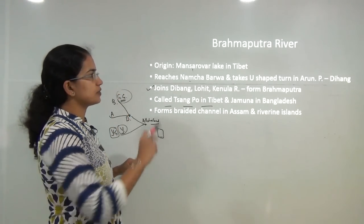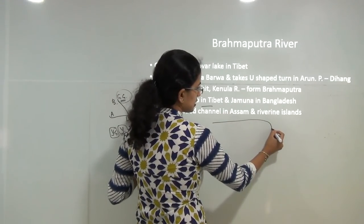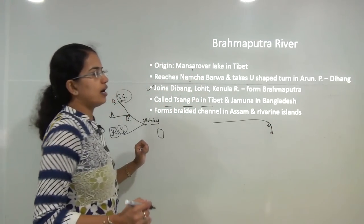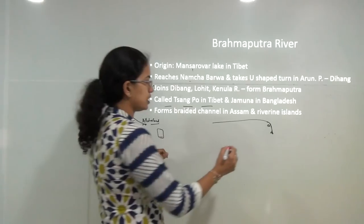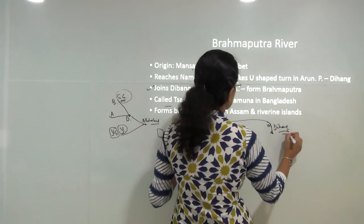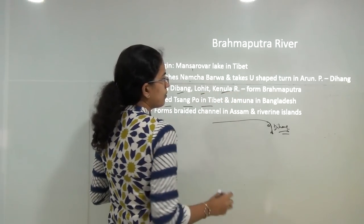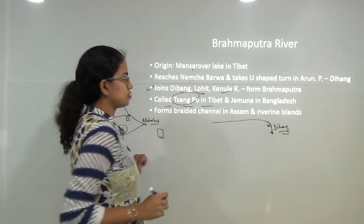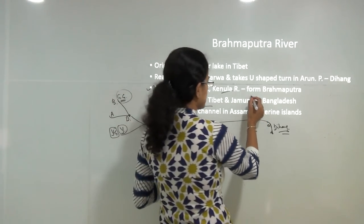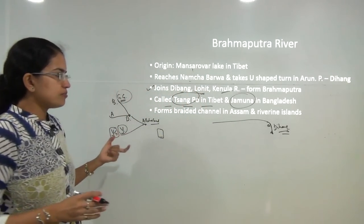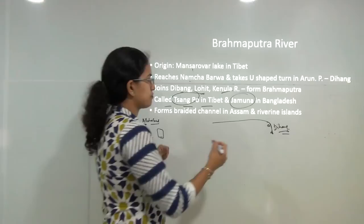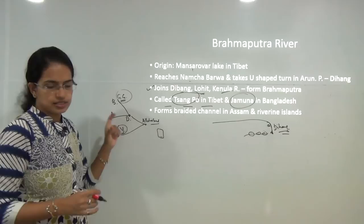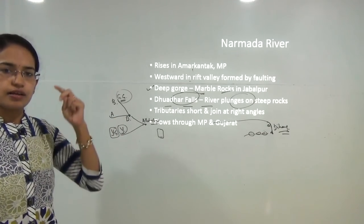The Brahmaputra originates at Mansarovar and enters India from Arunachal Pradesh by taking a sharp U-turn at Namcha Barwa, where it is known as Dihang. The Dihang joins tributaries Dibang, Lohit, and Kenula to form the Brahmaputra. In Tibet this river is known as Tsangpo, and in Bangladesh it is known as Jamuna. It forms a braided channel in Assam, creating numerous riverine islands in that region.